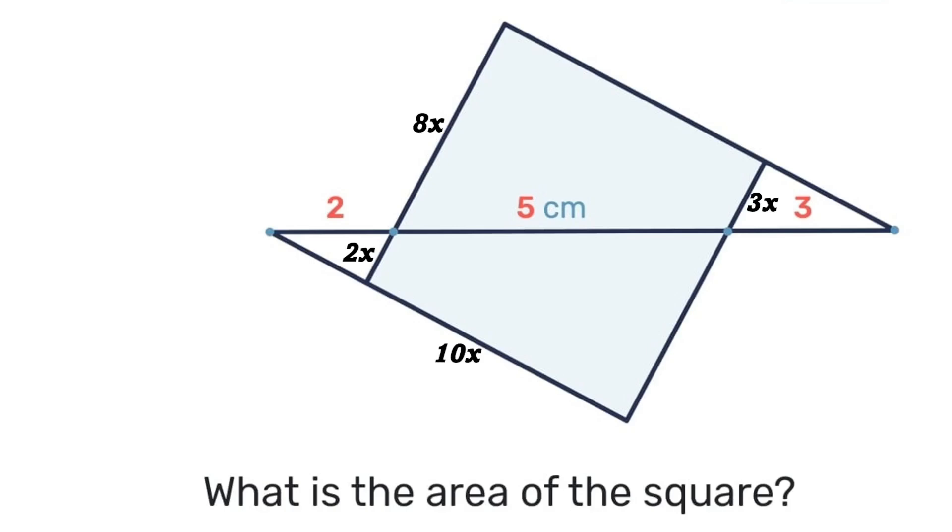If we make a construction line that runs parallel to the square, we can see that that 3x on the right will also be the very same 3x on the left. So if that is 8x and that is 3x, then 8 minus 3 leaves us with 5, so this is 5x inside of that triangle that we have made. Similarly, if that is 10x below, that will be the same 10x for that side.